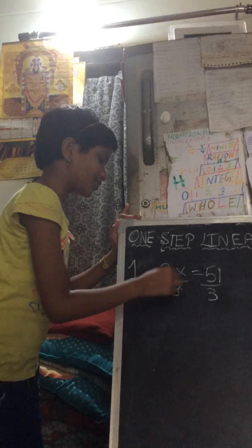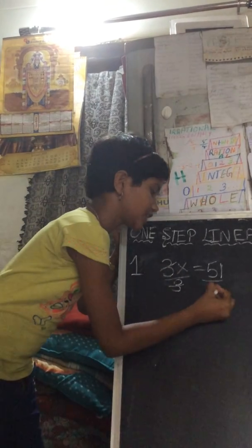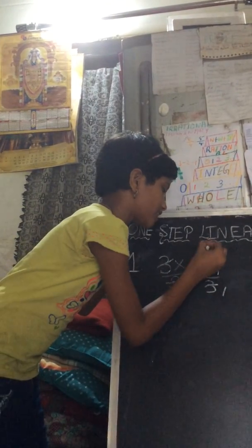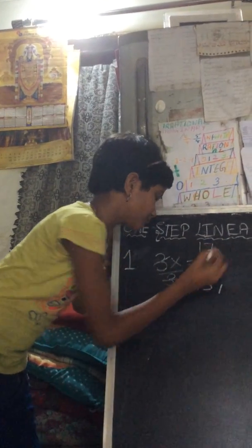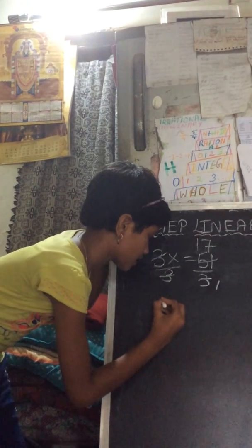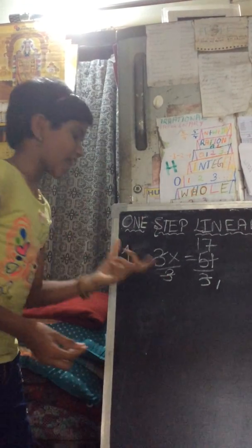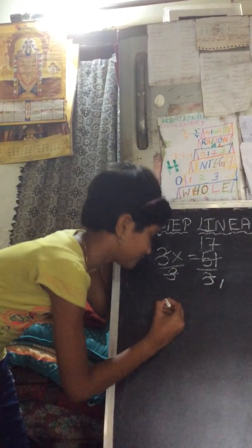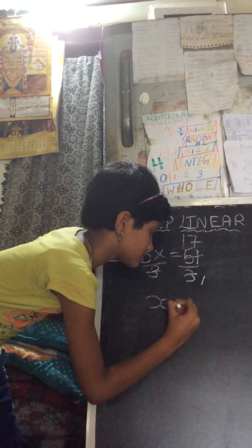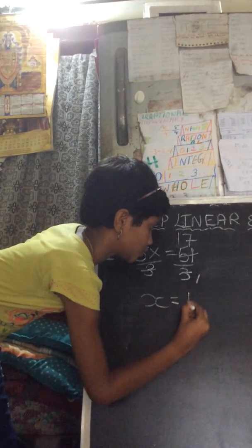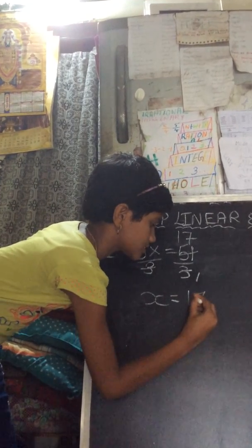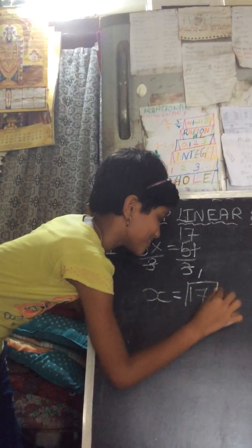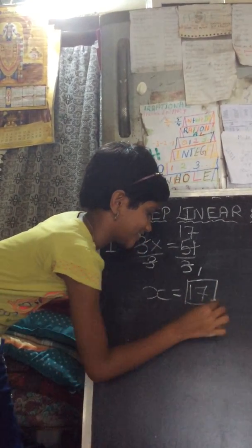3 and 3 get cancelled. 3 ones are 3, 3 seventeens are 51. So we have isolated x, and we write down x equals 17. Then we will box it.